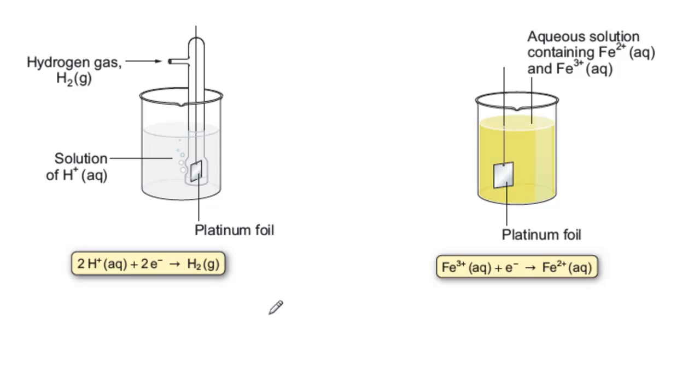You've seen how a simple cell, such as a Daniel cell, has a metal, zinc or copper, in contact with its ions, and that's the basis of each half cell. We can actually make a half cell from any combination of a more oxidized and a more reduced species in solution.